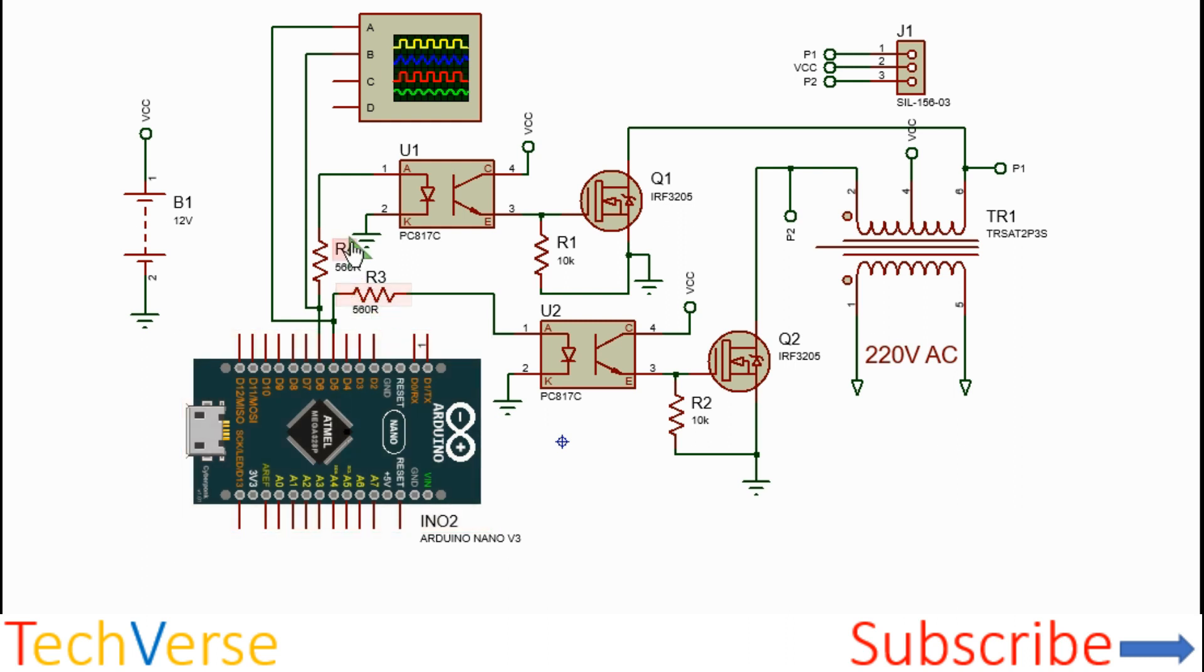So when D5 goes low and D6 goes high, the second optocoupler turns on Q1, and Q1 will conduct, with current flowing the other way around through Q1 into ground. It's a push-pull inverter project. I'll just show you the code right now.